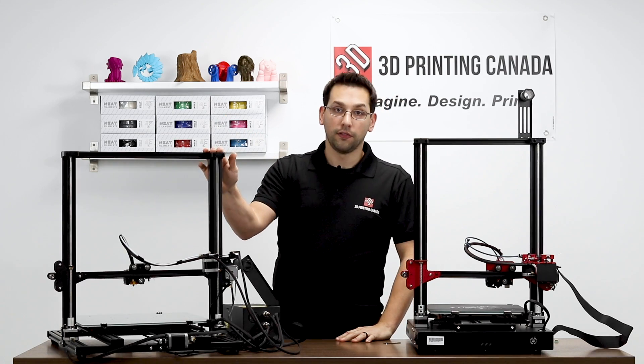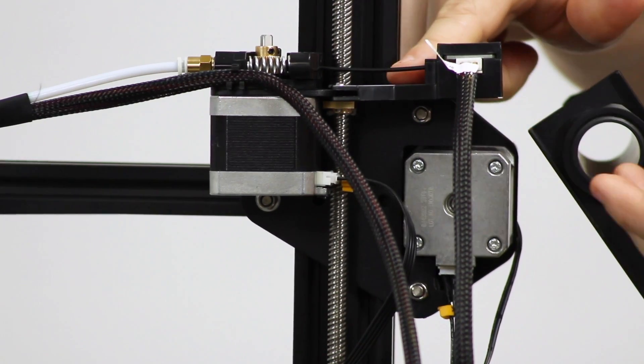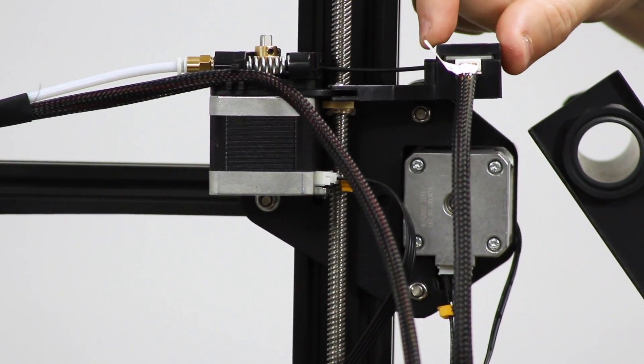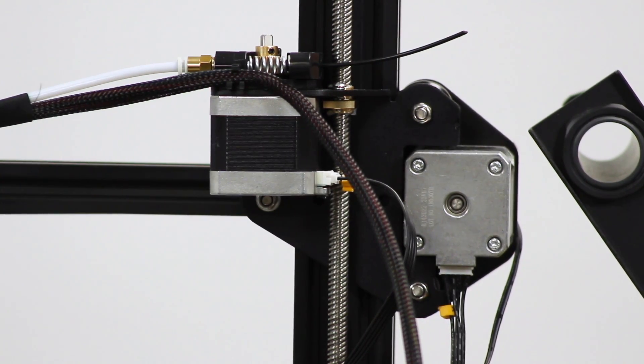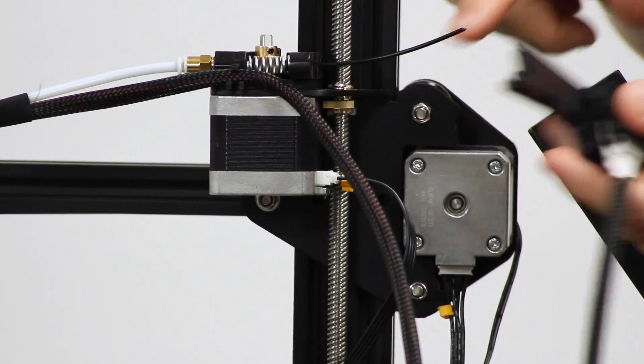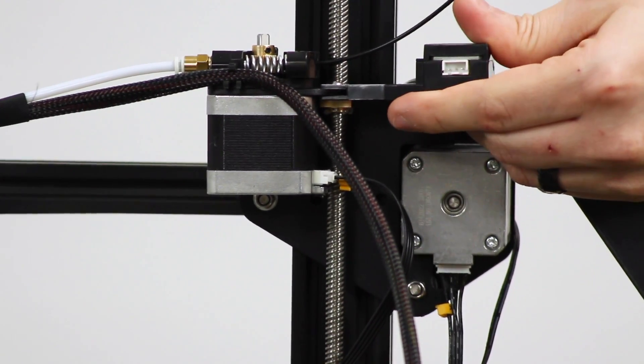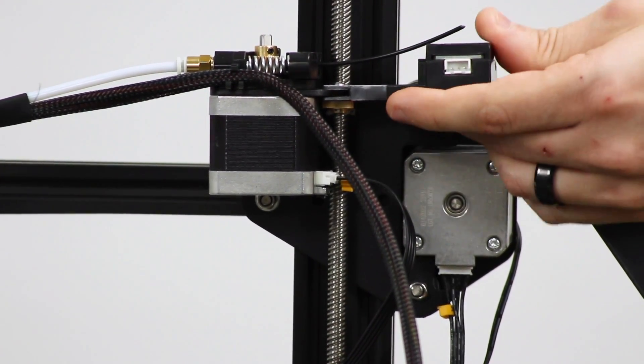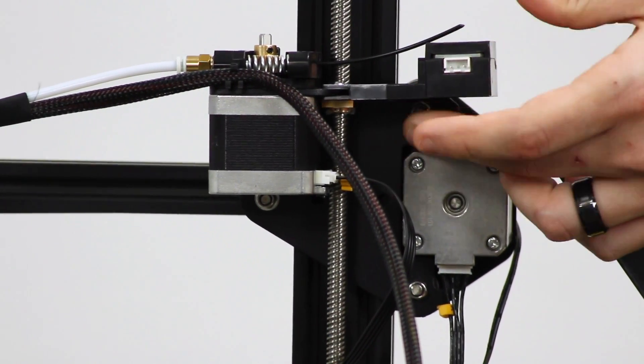So back on the CR-10, the extruder mechanism at the back here, the first thing that we notice is we have a filament run-out sensor on the side. And this filament run-out sensor is just kind of friction-fit onto this plate here. So it never seemed like a very good way of installing this.